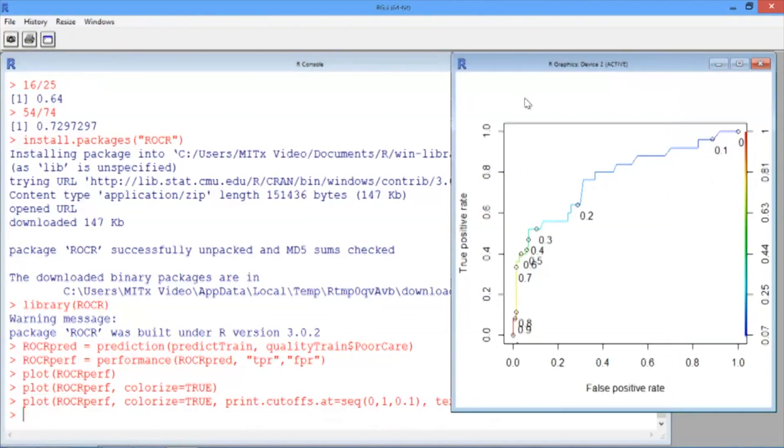If you go back to your plot window, you should see the ROC curve with threshold values added.